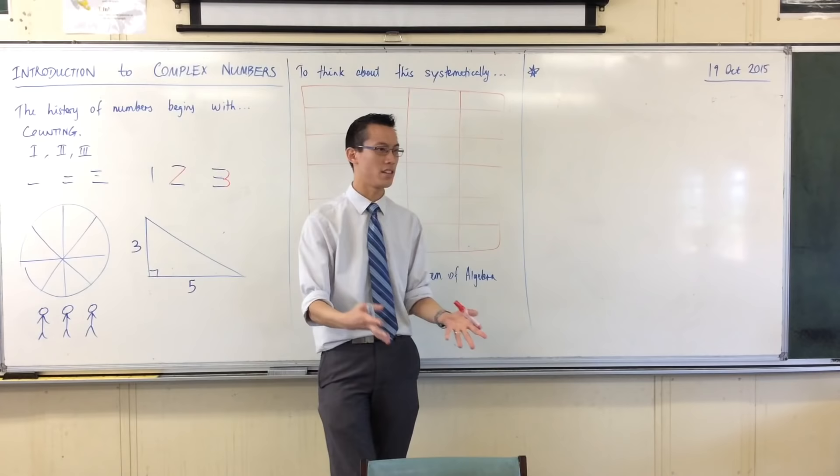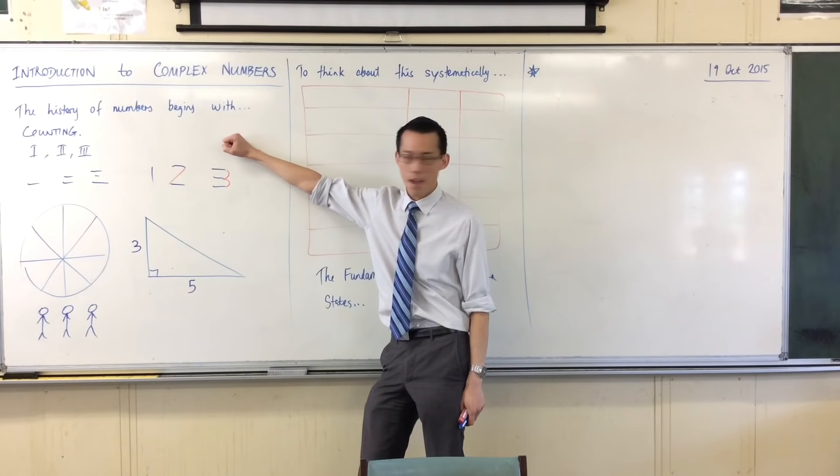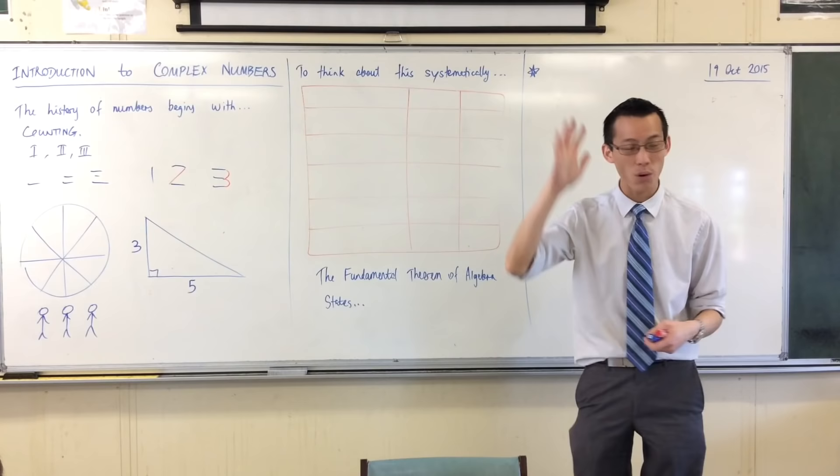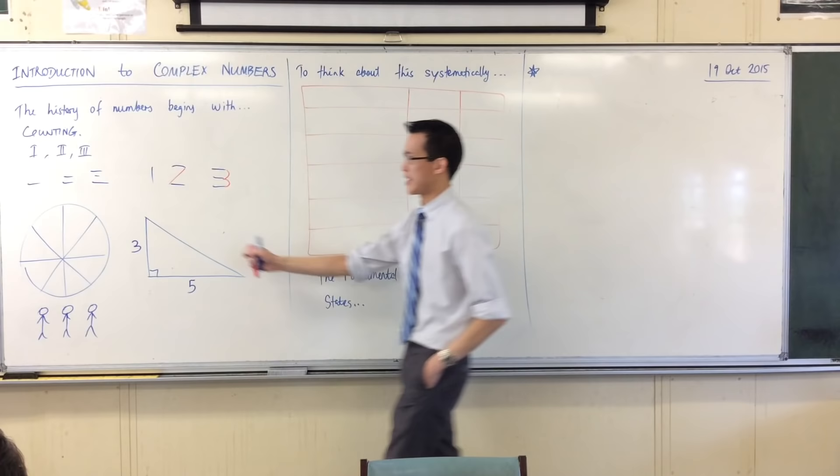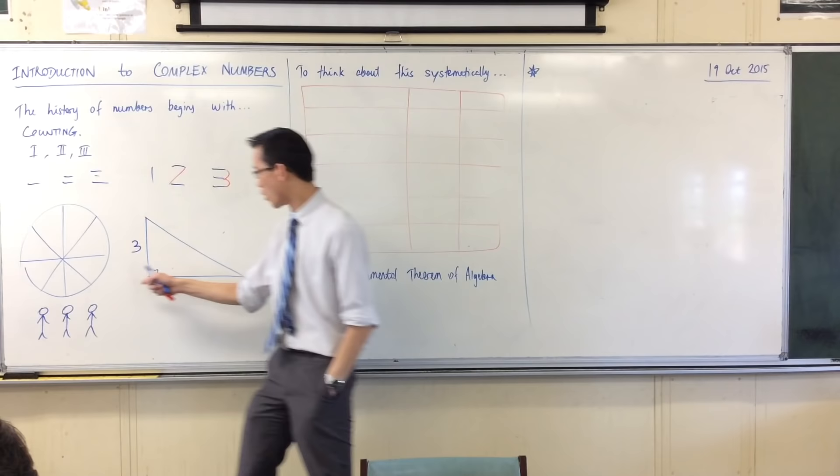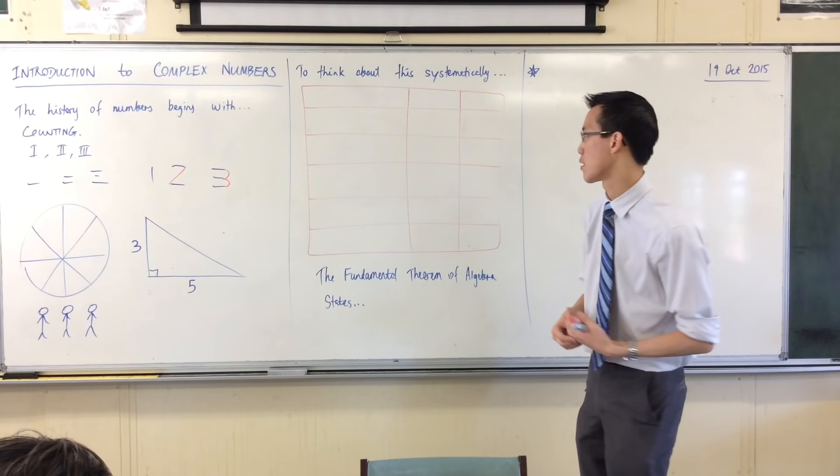Okay, so this whole history of the development of numbers is really about, well, you start here. Everyone starts here, but when you start to combine these in different ways, you start to realize one, two, three, four, they're not enough. Okay, so let's think about this in a systematic way. Draw up this table, if you like.